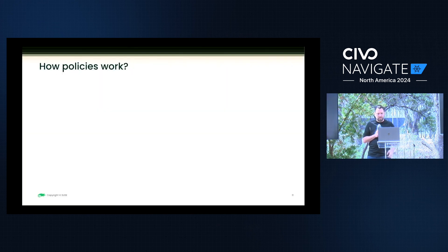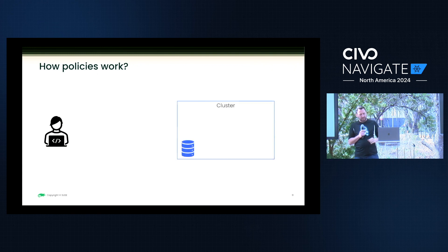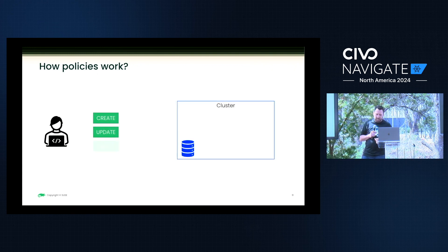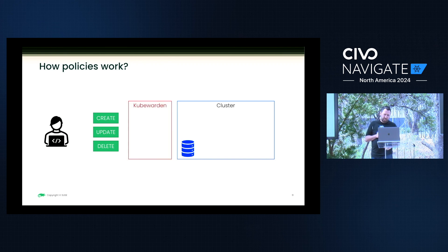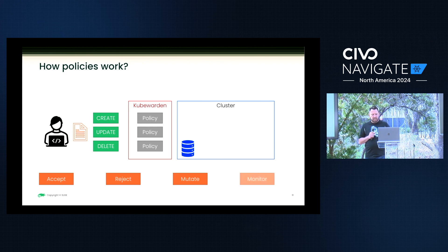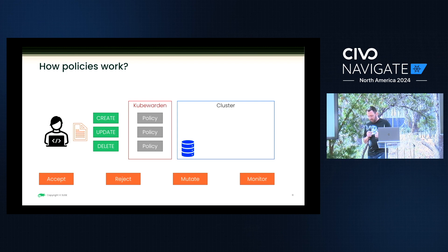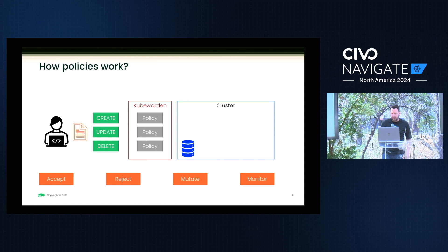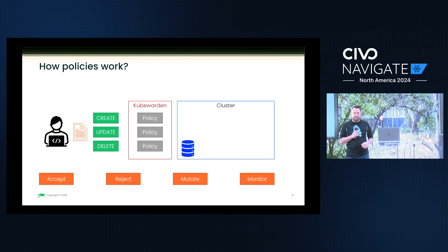How do policies work? You have a user who wants to do something to a cluster, and Kubewarden manages things you would normally do against that cluster — create, update, or delete. Kubewarden has policies that interdict those actions. If you attempt to do something, it has multiple stages: you can monitor where someone violated a policy and throw out a message documenting it without blocking, or you can accept the change.